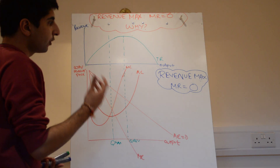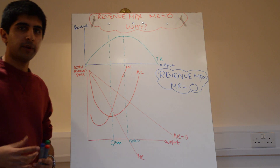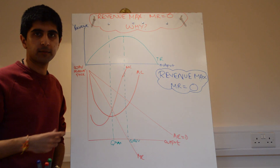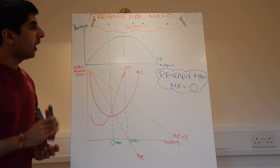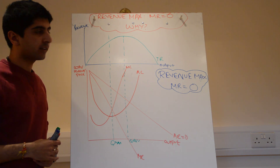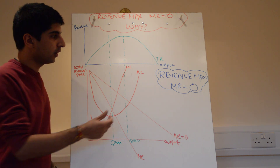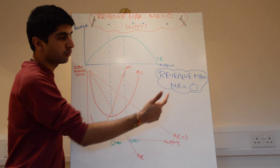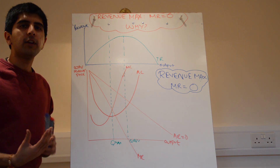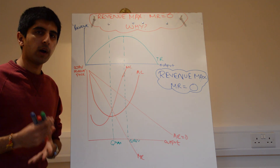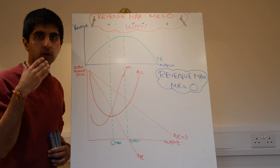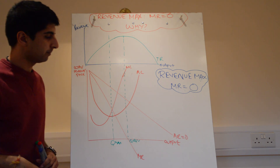Something else we use a lot in economics is the concept of revenue maximisation. We always say that revenue maxing occurs where marginal revenue is zero, but we don't really explain why that is the case very well. So this video will explain why.